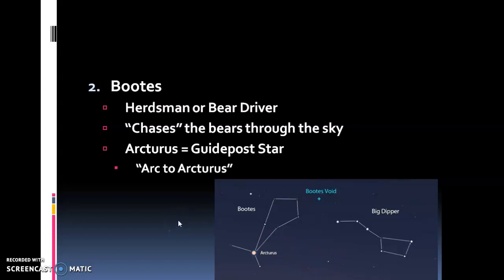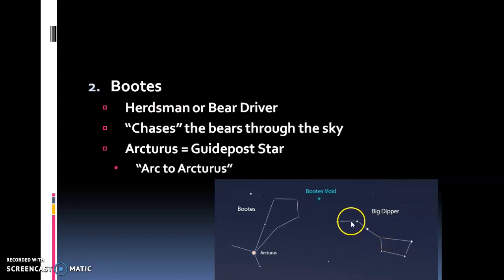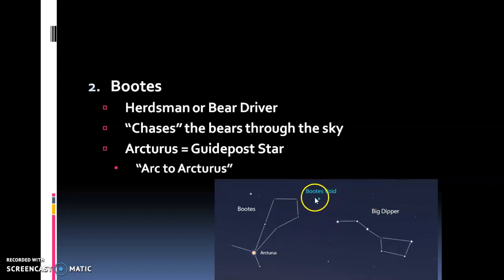The guidepost star of Boötes is Arcturus, and the way to find it is: you 'arc to Arcturus.' Start at the ladle of the Big Dipper and follow the handle — not the pointer stars we use to find the north star, but the handle. Follow that natural arc or curve, and there's Arcturus. There's also something called the Boötes Void — a dark spot in the sky near there where there aren't many visible stars.